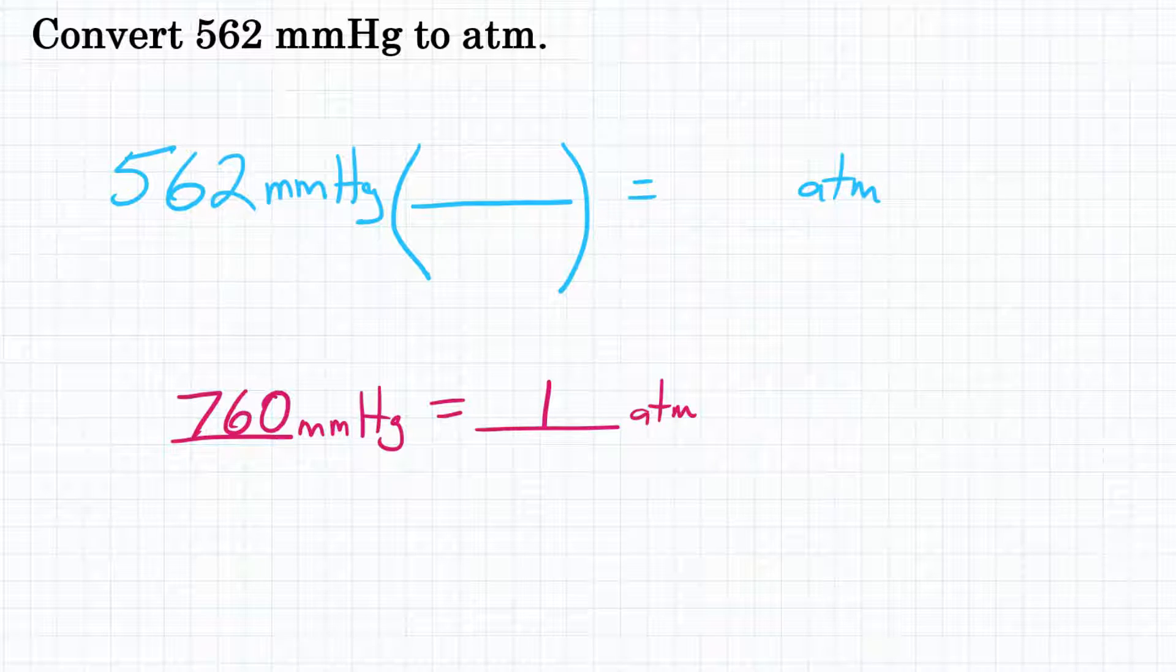Since we're starting with millimeters of mercury, that means we need millimeters of mercury in the bottom of our conversion factor. Because we want to go to atmospheres, that means atmospheres must be the unit on top of our conversion factor. Now I just fill in the relationship where 760 millimeters of mercury is equal to one atmosphere.